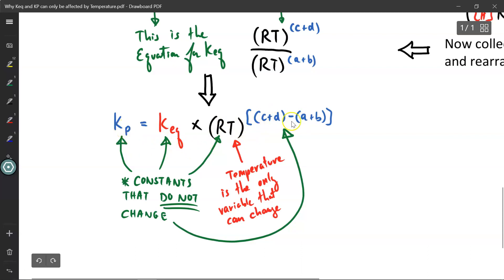You'll notice that of all these variables, every single one of them is a constant. They don't change. Kp is a constant, Keq is a constant, R is a universal gas constant. These over here are the coefficients. They are constant because once you balance the equation, that's not going to change. The only variable that will potentially change is temperature. And so that's why Kp values and Keq values are only dependent on temperature. They are not affected by any other variable, at least as far as you're concerned in this introductory course.